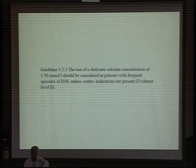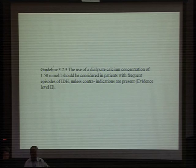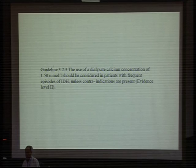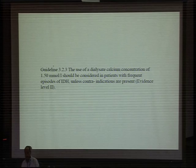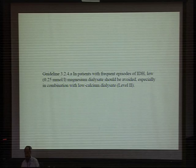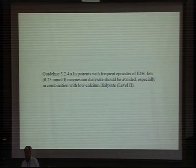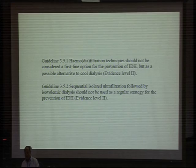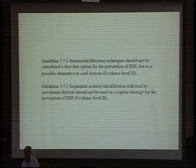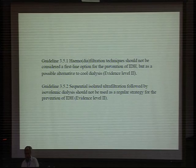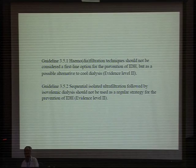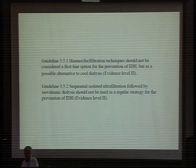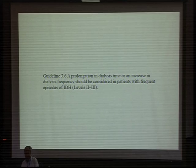Dialyzate calcium concentration of 1.5 mmol/L should be considered in patients with frequent episodes of intra-dialytic hypotension. Low magnesium dialyzate should be avoided, especially in combination with low calcium dialyzate. Hemodiafiltration should not be considered a first-line option but is a possible alternative to cold dialyzate. Third-line approach includes considering adding midodrine and L-carnitine; if the patient fails hemodialysis, peritoneal dialysis should be prescribed. Prolongation of dialysis time or increased dialysis frequency should be considered in patients with frequent episodes.